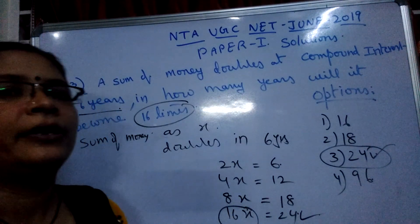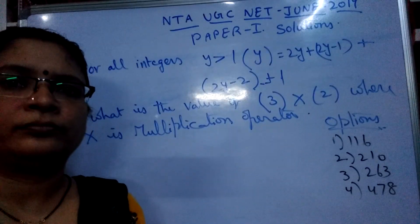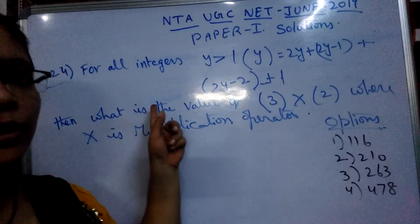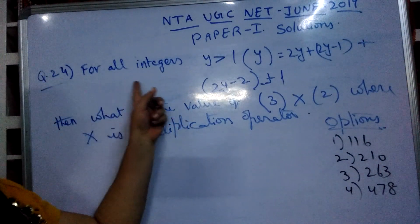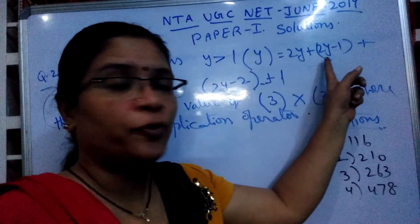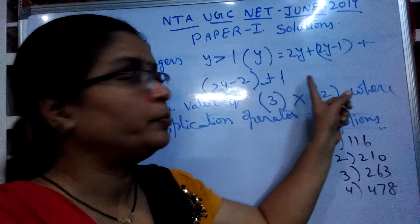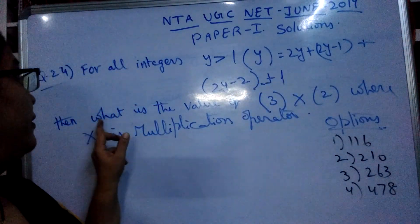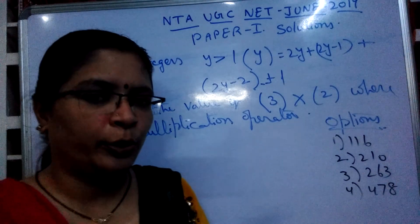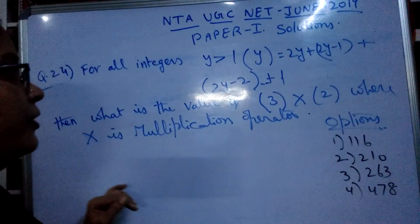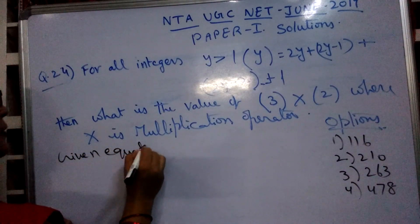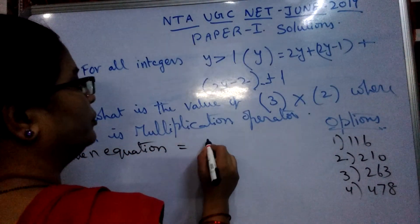We go to the next question — question number 24. For all integers Y greater than 1, Y⊗Y is defined as 2Y + 2Y−1 + 2Y−2 + ... + 1. What is the value of 3⊗2? The options are given as 116, 210, 263, and 478.